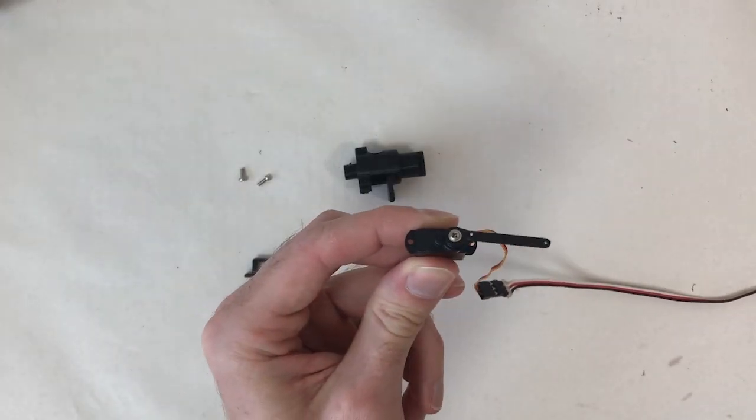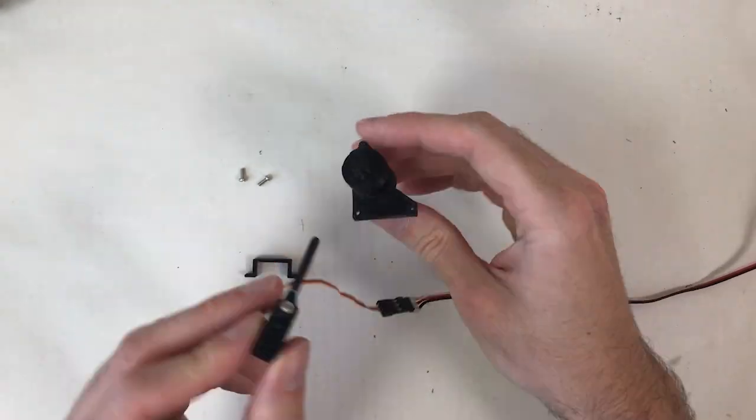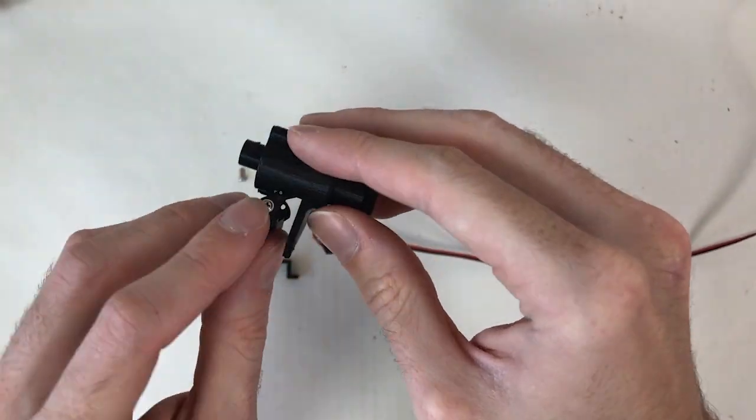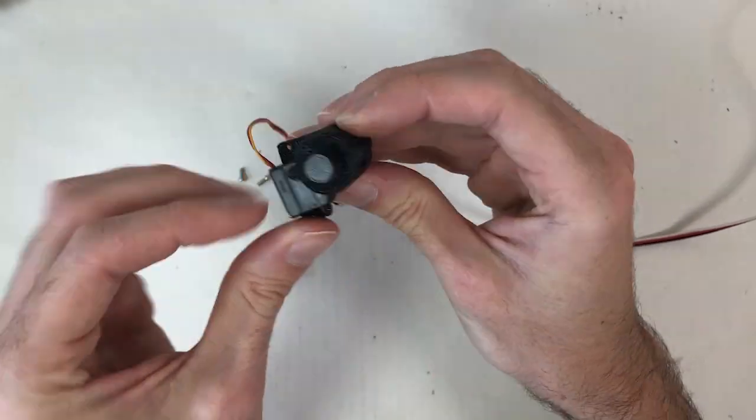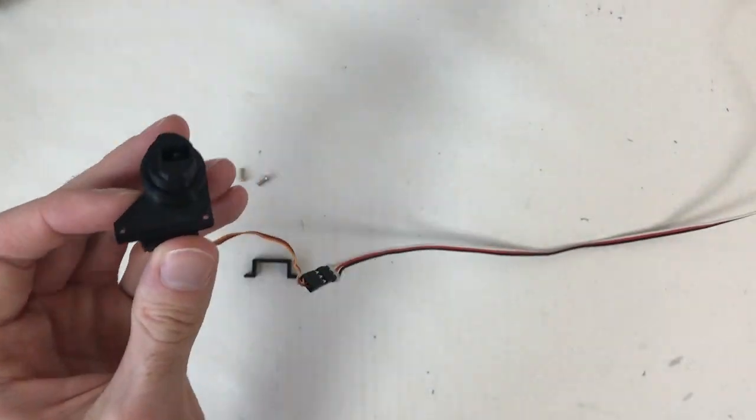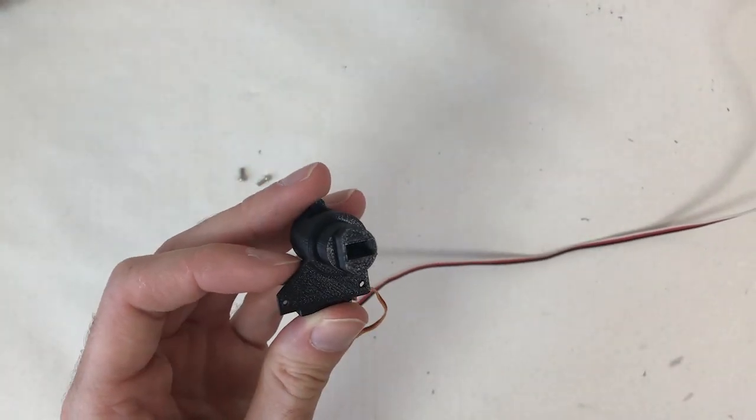Once we have the linkage in place, the next step is to bolt the servo motor to the hub. To do this, I carefully insert the servo motor and the attached linkage inside of the hub. Then, I secure the servo motor in place using a bracket.